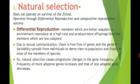According to Neo-Darwinism, natural selection does not operate on the survival of the fittest but rather through differential reproduction and comparative reproductive success. Members that are better adapted to the environment reproduce at a higher rate and produce more offspring than members which are less adapted.